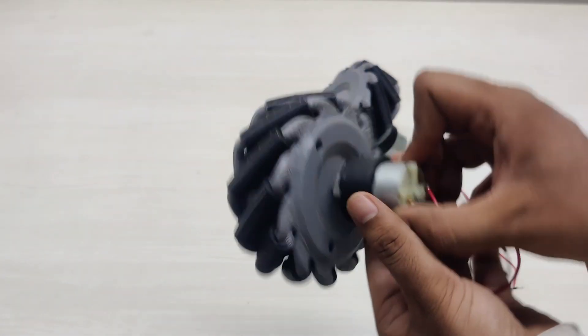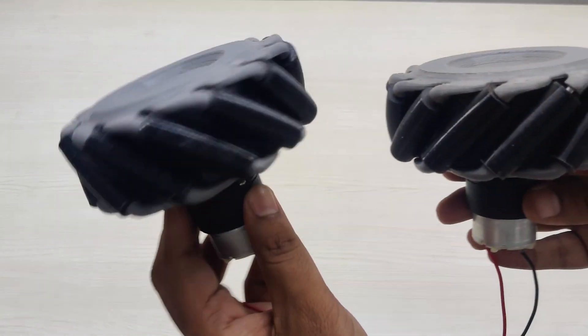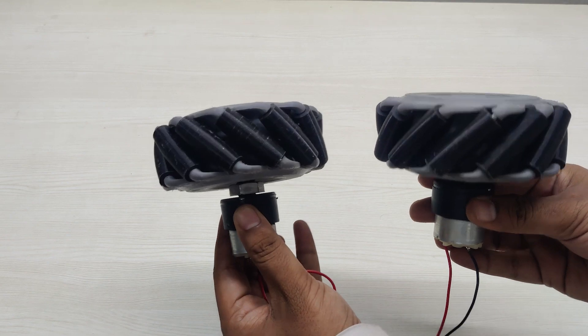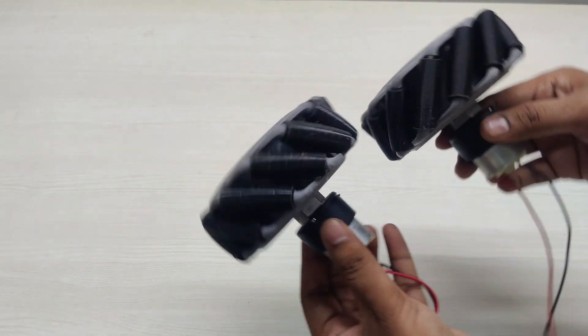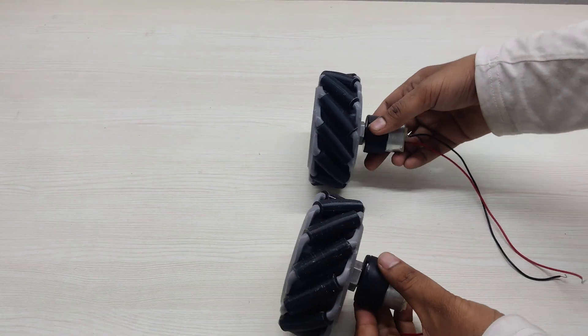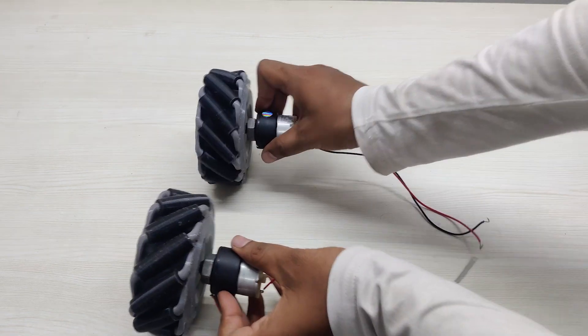But for that we need another wheel, but make sure that the orientation of the roller is reversed. Now when the sets of wheels are rotated in opposite direction they tend to move in sideward direction.